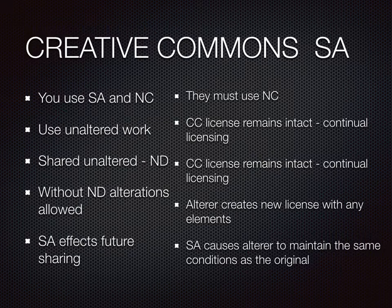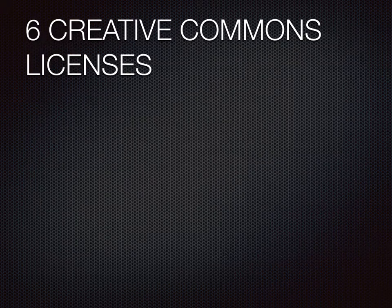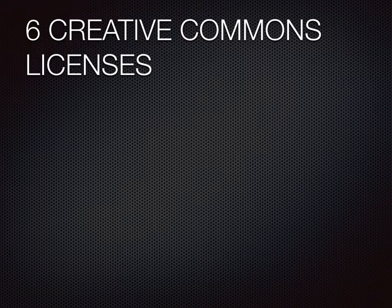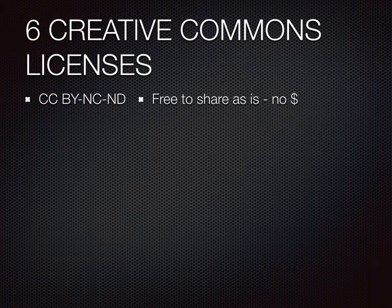These four elements are blended into six Creative Commons licenses. Creative Commons typically explains these licenses from least restrictive to most restrictive, but it makes more sense to begin with the most restrictive — the most like copyright — and allow the explanation to become less and less restrictive. The most restrictive license, closest to true copyright, is the BY-NC-ND, or Attribution, Non-Commercial, and No Derivatives.